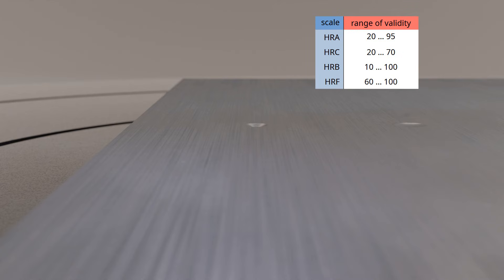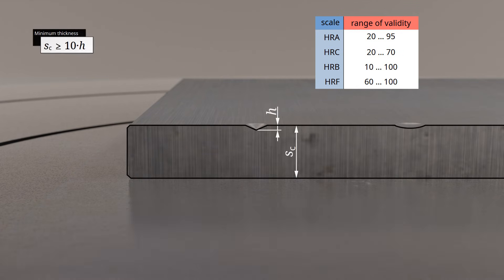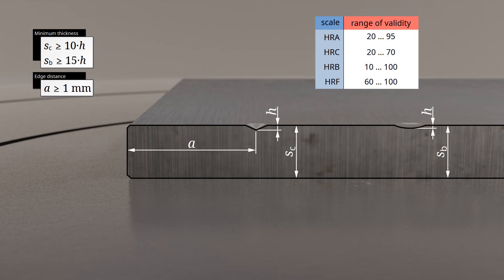A minimum sample thickness must also be ensured so that the result is not influenced by the support of the testing machine. For test variants with cone-shaped indenters, the minimum sample thickness corresponds to 10 times the permanent indentation depth. For scales using spherical indenters, the minimum sample thickness corresponds to 15 times the permanent indentation depth. In all cases, the distance of the indentation to the sample edge must be greater than one millimeter. The surface of the specimen must also be ground and must not exceed a mean roughness of 1.6 micrometers. Otherwise, the surface roughness would lead to large measurement uncertainties.